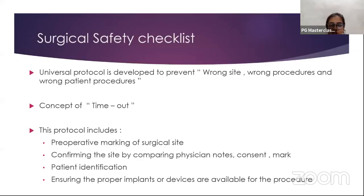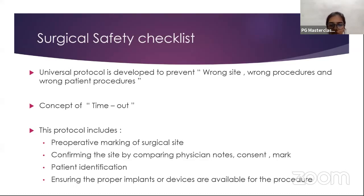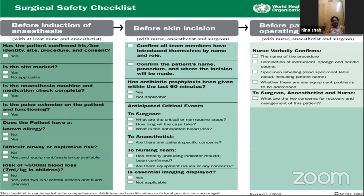The Surgical Safety Checklist is the universal protocol developed to prevent wrong site, wrong procedure, and wrong patient procedures. There is a concept of 'time-out' during which the surgeon states the patient details, the procedure to be done, any concerned complications to be kept in mind, and the site of surgery. The protocol includes preoperative marking of surgical site, confirming the site by comparing physician notes, consent and mark, patient identification, and ensuring proper implants or devices are available.